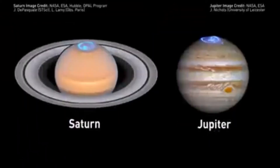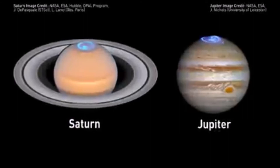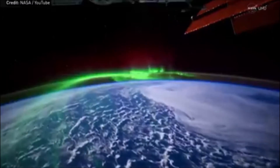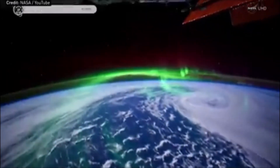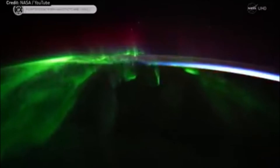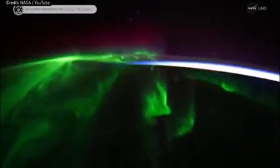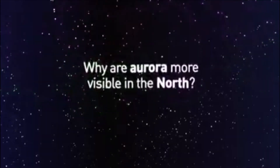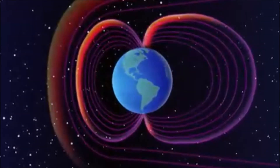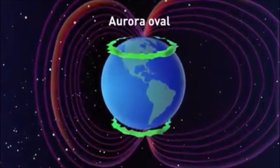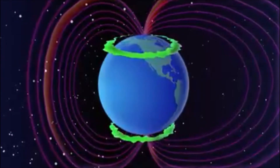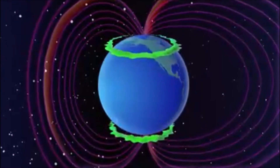Saturn and Jupiter also have beautiful auroras, even more powerful than Earth's. Scientists are always looking at new missions to better understand the relationship between the sun and the Earth. Most auroras occur in a band called the auroral oval — a huge ring of aurora above the Earth's north and south magnetic poles. The northern lights we see are just a small section of the auroral oval.